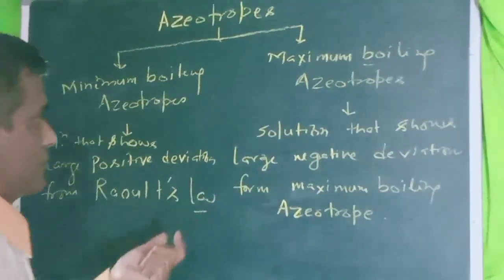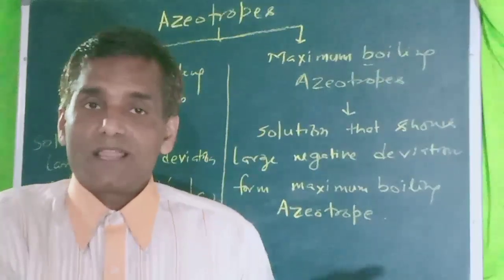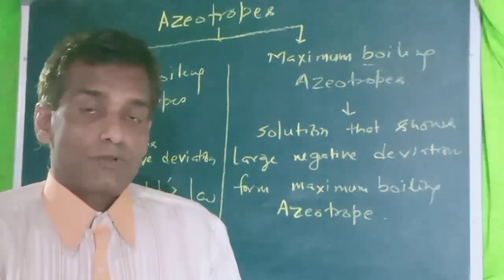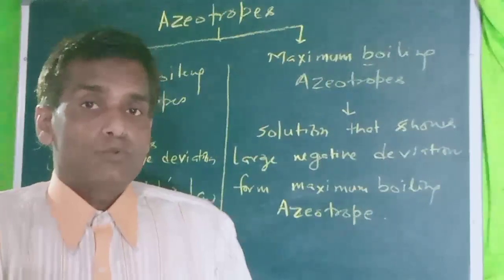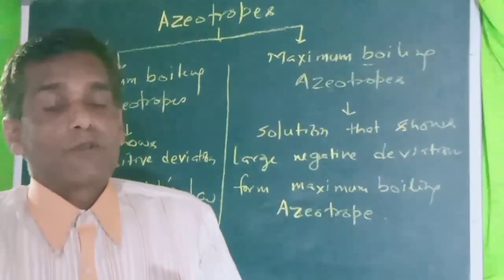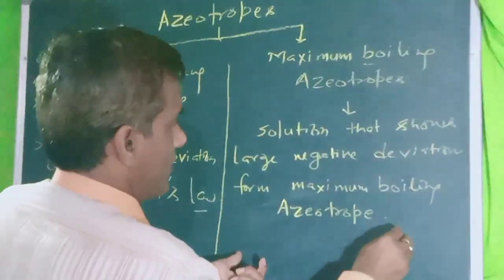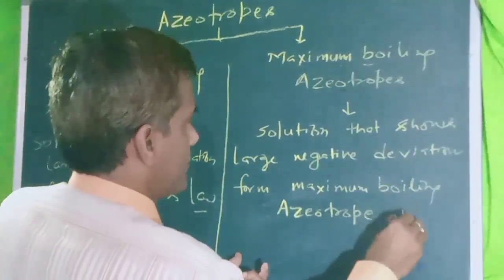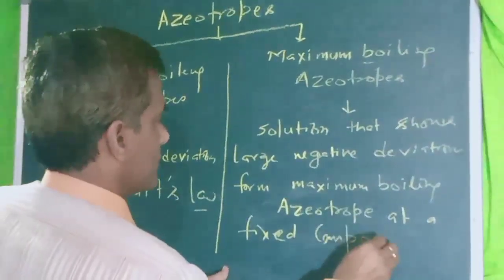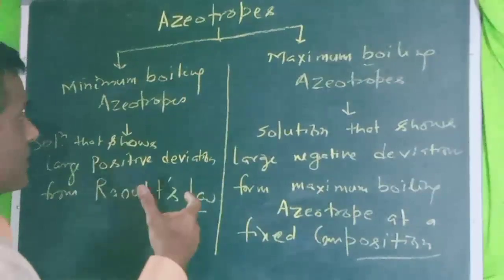The second condition is that the constant boiling points are caused by the azeotropes. There is a maximum boiling point temperature for the maximum boiling azeotrope at a fixed composition. Composition is very important — it boils at a fixed composition.